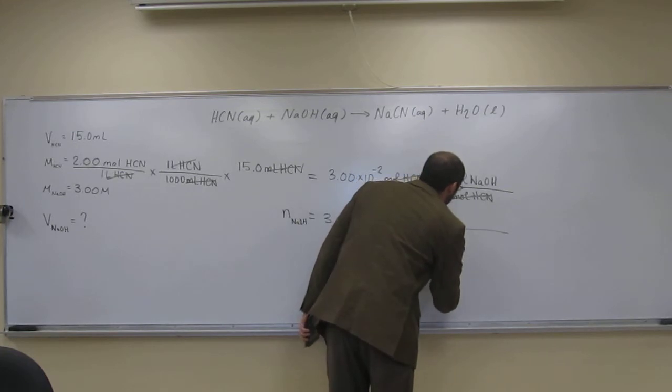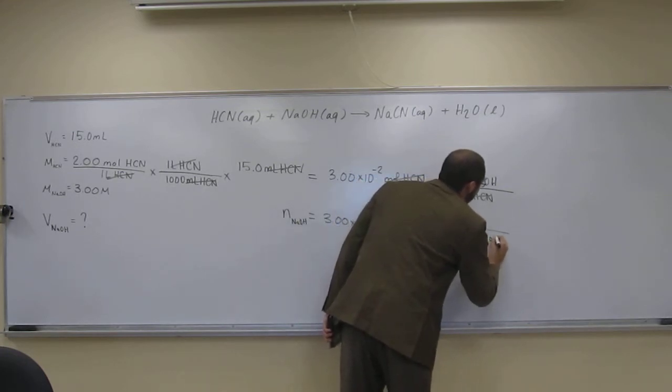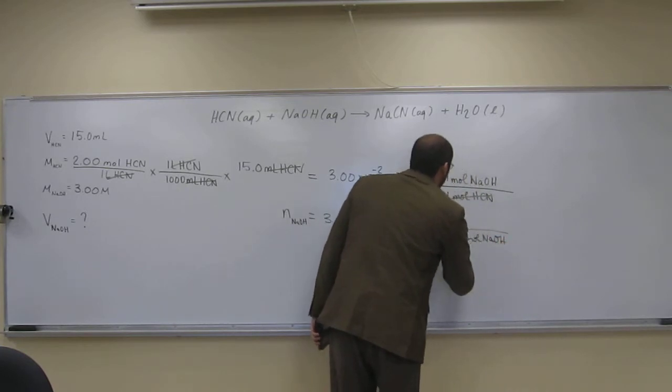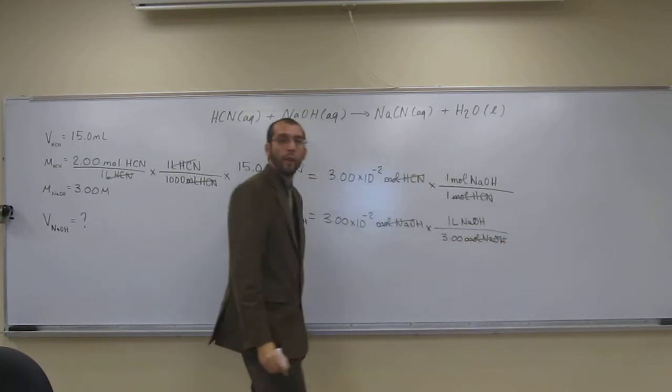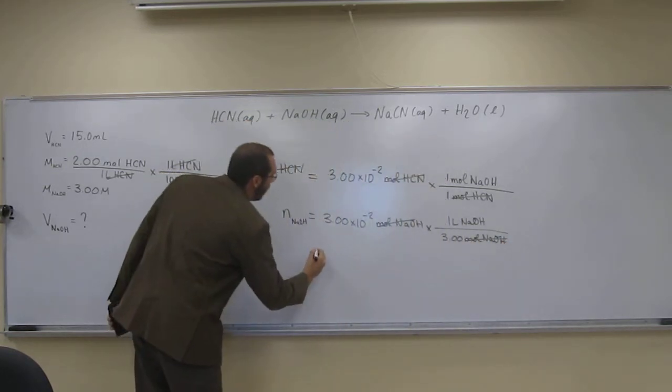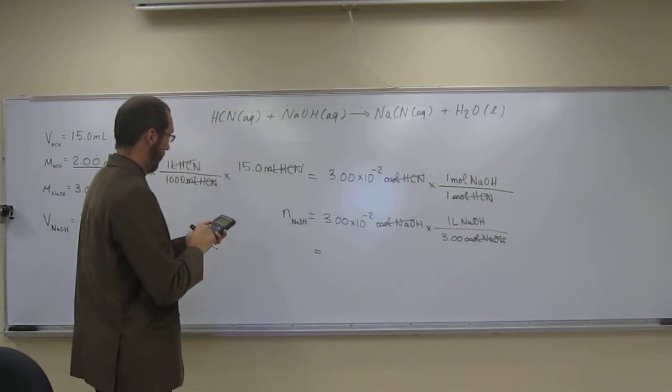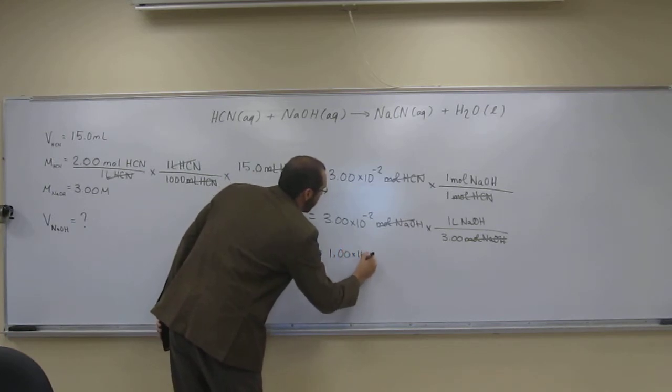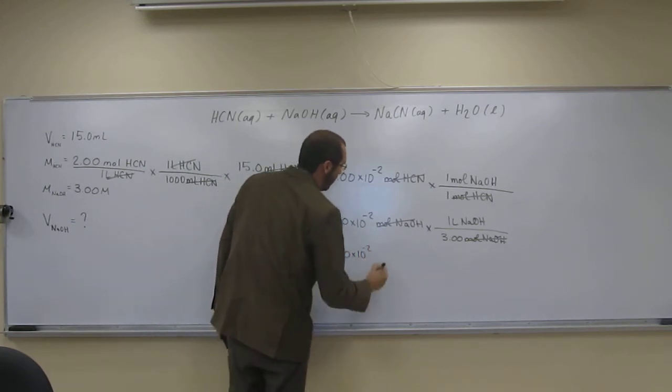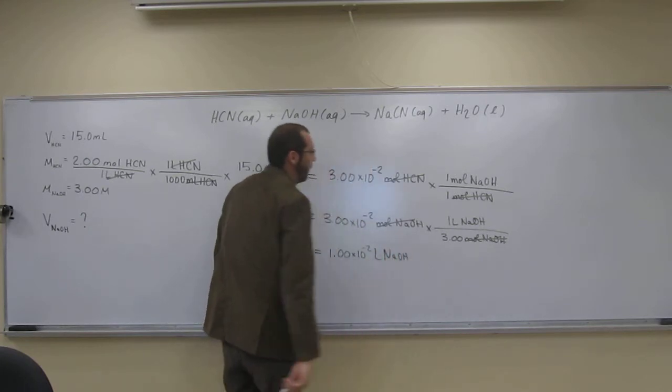So we've got 3.00 moles of NaOH per 1 liter of NaOH. Like that. So divided by 3, 1.00 times 10 to the negative 2 liters of NaOH.